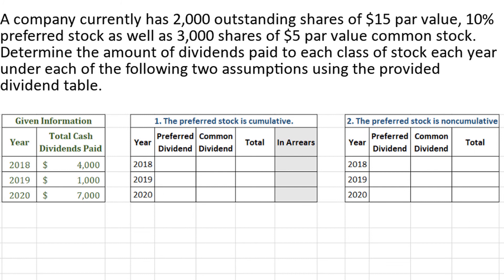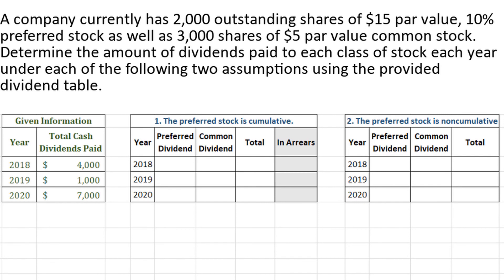The first thing we'll have to do is calculate the preferred dividend. Remember, the preferred dividend is found by taking the number of shares, multiplied by the par value, and then multiplied by the percent. In this case, we have 2,000 preferred shares, so we take 2,000, multiply by the $15 par value, and then multiply by 10%, or 0.1. When we multiply those three numbers together, we get $3,000 as the preferred dividend per year.